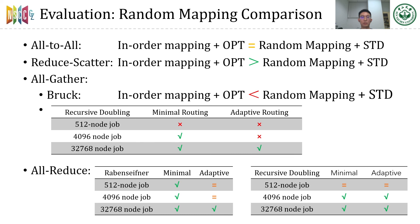The above results are based on in-order mapping. According to reviewers' suggestions, we also compared our optimization with in-order mapping against random mapping plus standard algorithms. In all-to-all operations, their performances are the same. In reduce-scatter, our optimization is faster than random mapping. As for all-gather, our optimization is slower in the Bruck algorithm, but our optimization for recursive doubling performs better in large job sizes and medium-sized jobs with minimal routing. As for all-reduce, our optimization shows better performance in larger data sizes and minimal routing. Therefore, there is still room for further optimization, and we are still working on it.